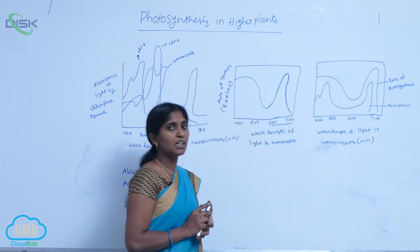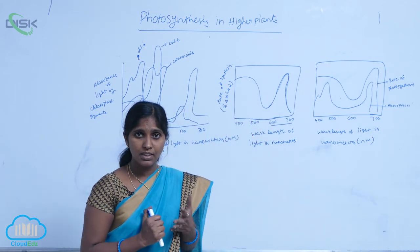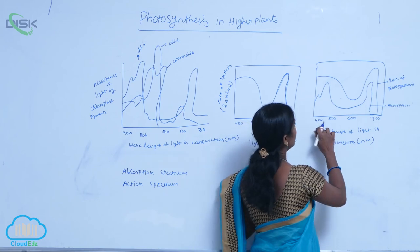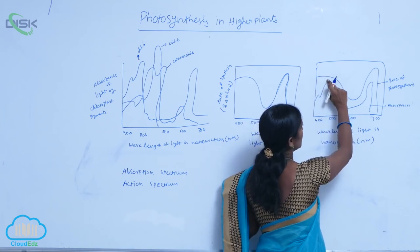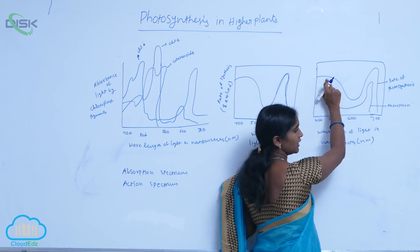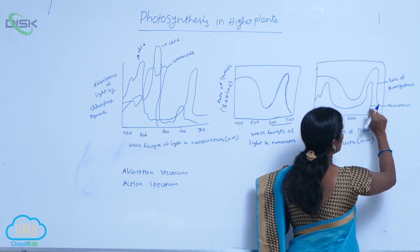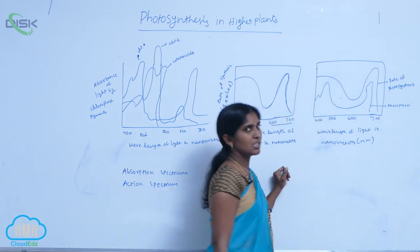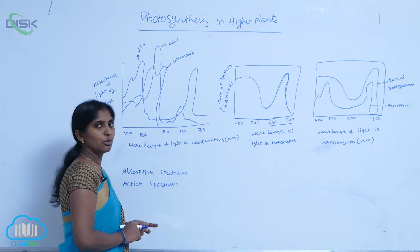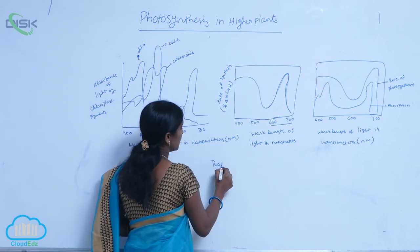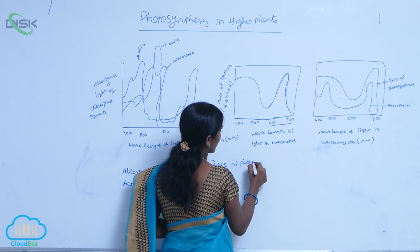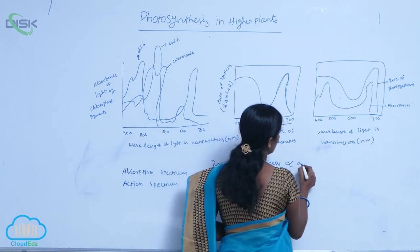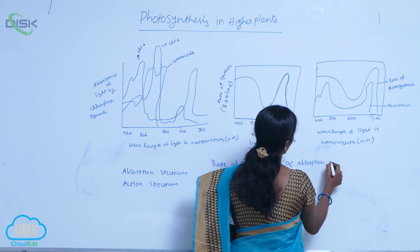Absorption spectra indicate the absorption of pigments at what wavelength of light. Between 400 to 500 nanometers, the photosynthetic absorption rate is high and the photosynthetic rate is also high. Between 600 to 700 nanometers, the absorption peak is high and the rate of photosynthesis is also high. It means the rate of photosynthesis is directly proportional to the absorption of light.